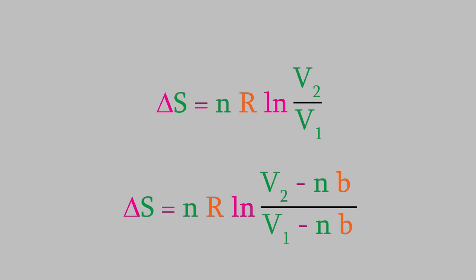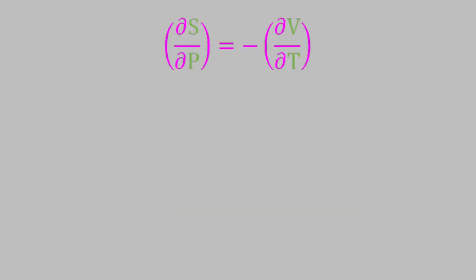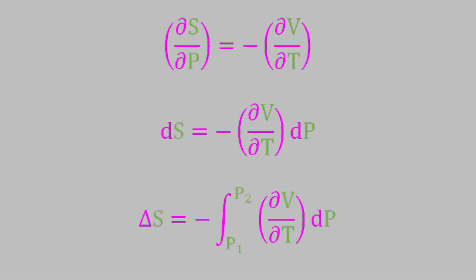Let's see what we can do with another of the Maxwell relations, this one, which we originally got in the last video by starting with an equation for the Gibbs free energy. Once again, we'll start by getting dS by itself on the left side of the equation. Now, we'll change it to delta S by taking the integral. This time, the variable of integration is P, the pressure. We now need to get rid of the partial derivative.